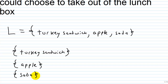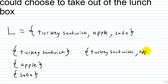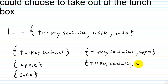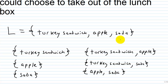I could choose to take out a turkey sandwich and an apple. I could choose to take out a turkey sandwich and a soda. And I could also choose to take out an apple and a soda. So now I have three subsets with exactly two elements.